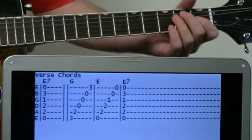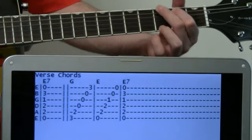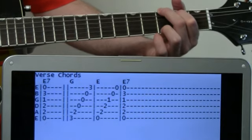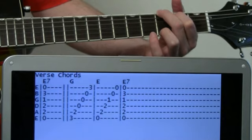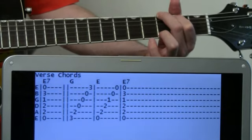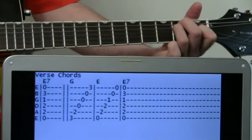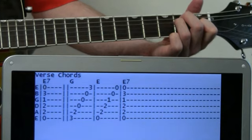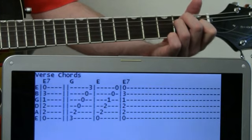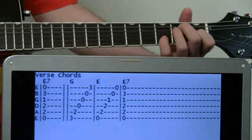And then it kicks up for a measure to a G chord and we're just going to kind of pick through that. One measure and then just go to a regular E chord, pick through that, and then we'll be back to that E7 with the 13 on there.